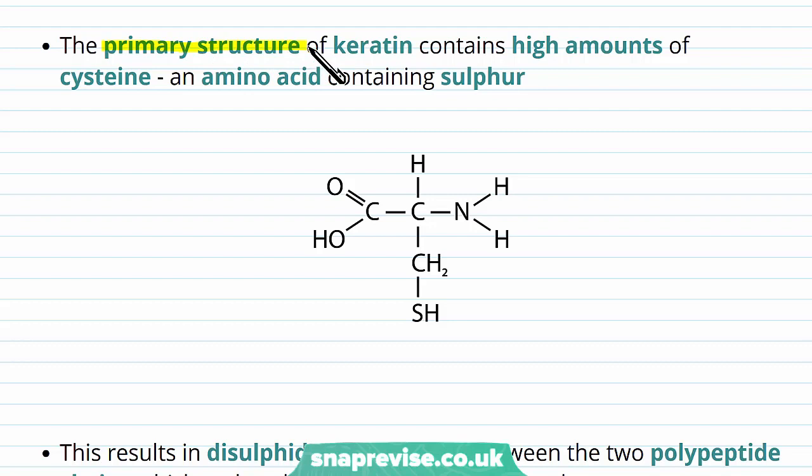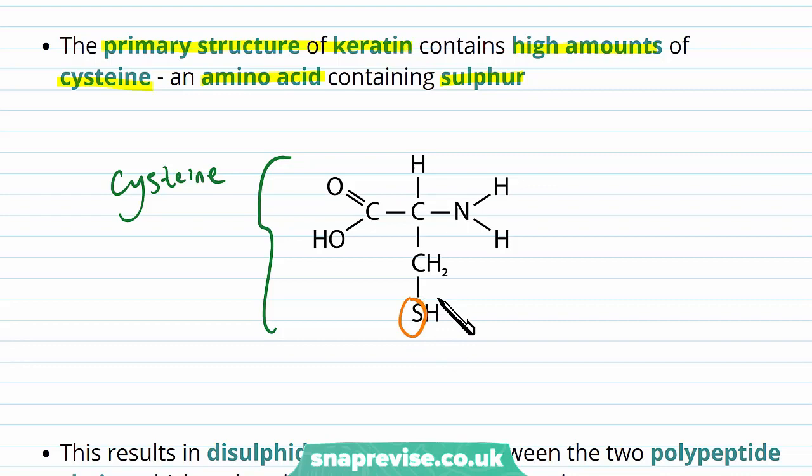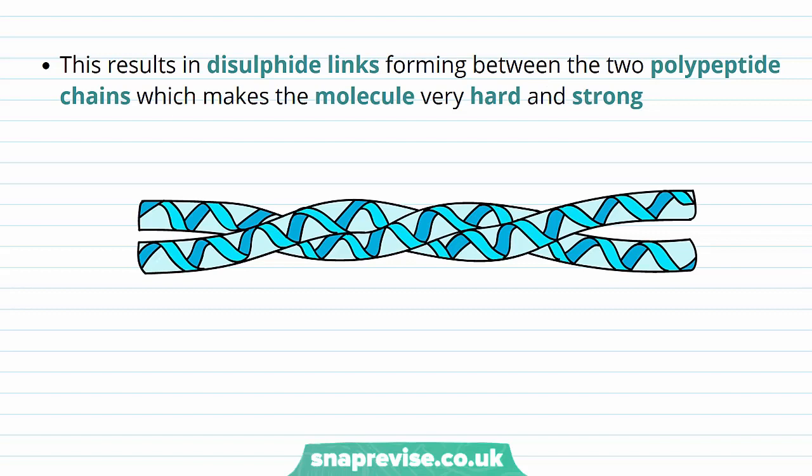The primary structure of keratin — the order of amino acids — contains a high amount of cysteine. Cysteine is one of the 20 amino acids and contains sulfur in its R group. This is important because amino acids with sulfur can form disulfide links between two polypeptide chains, making the whole molecule very hard and very strong.